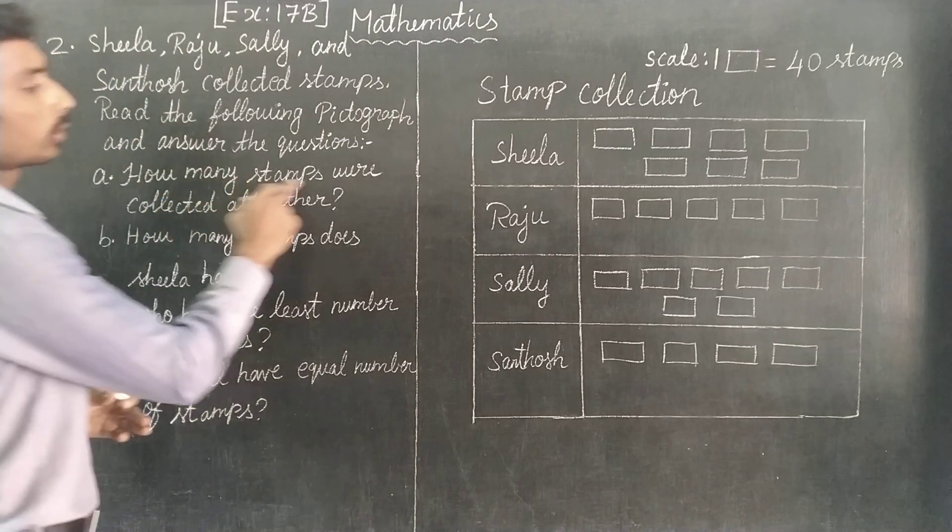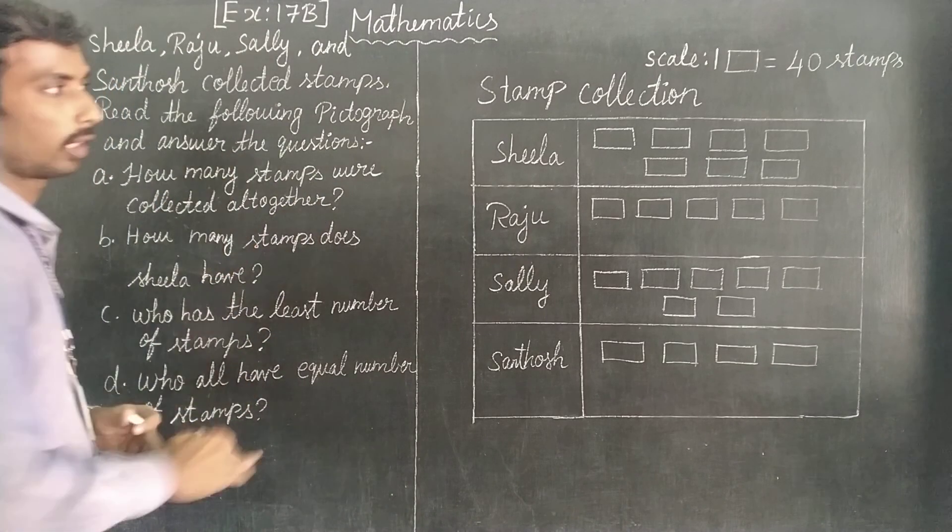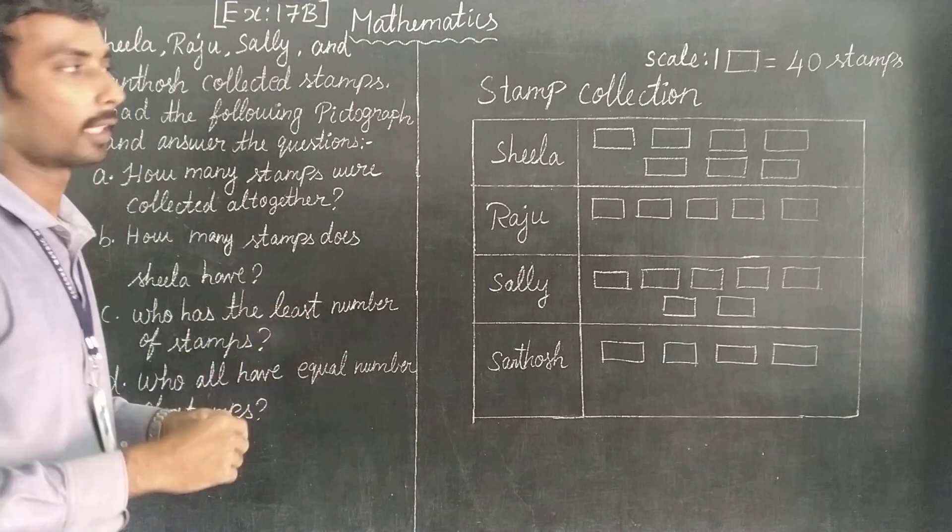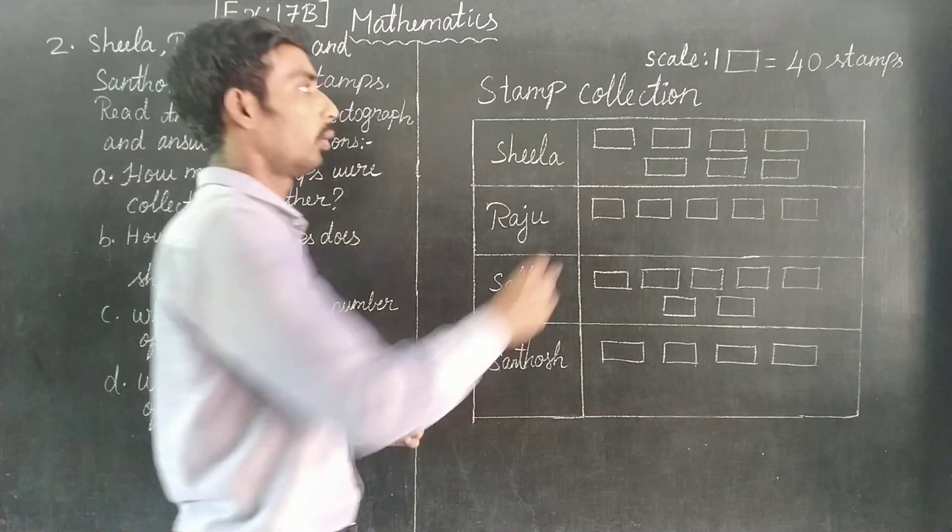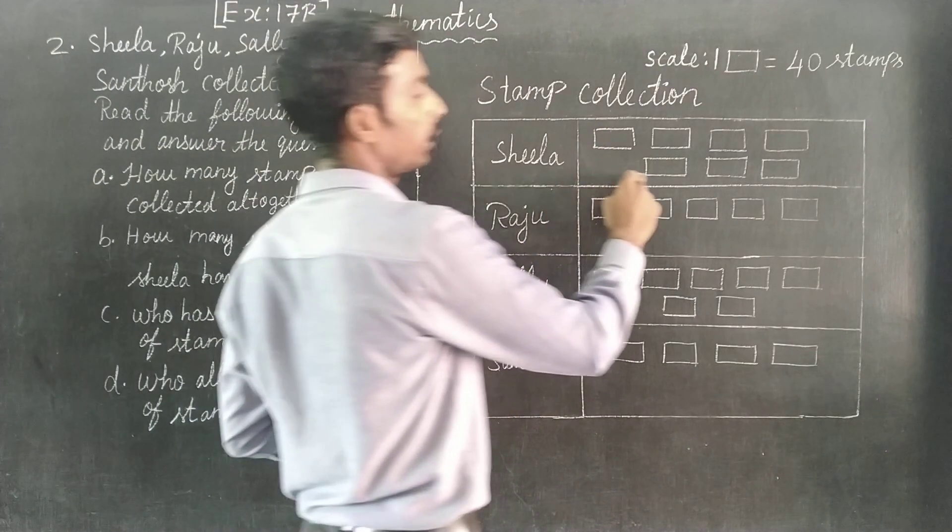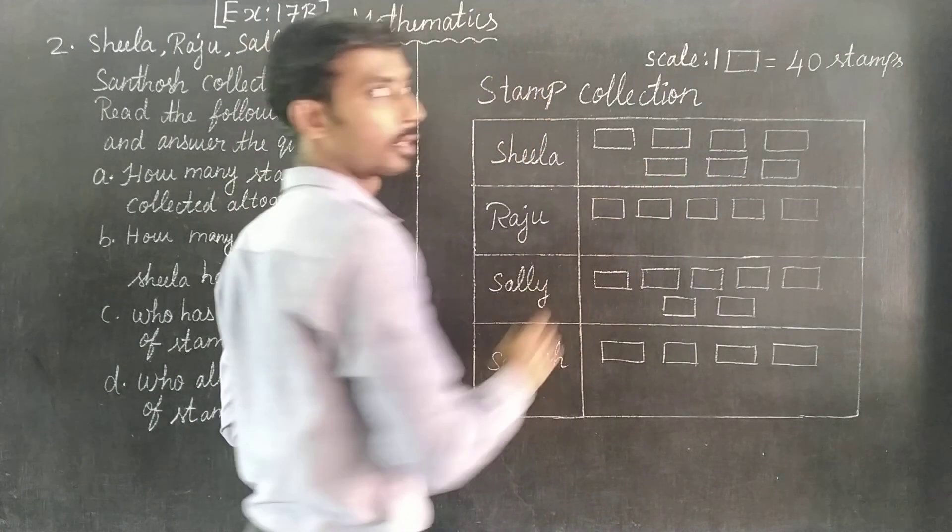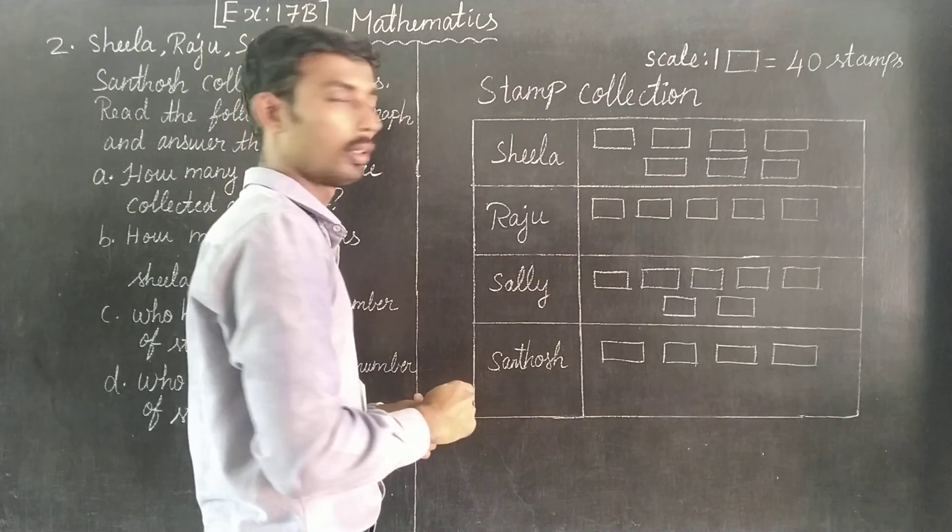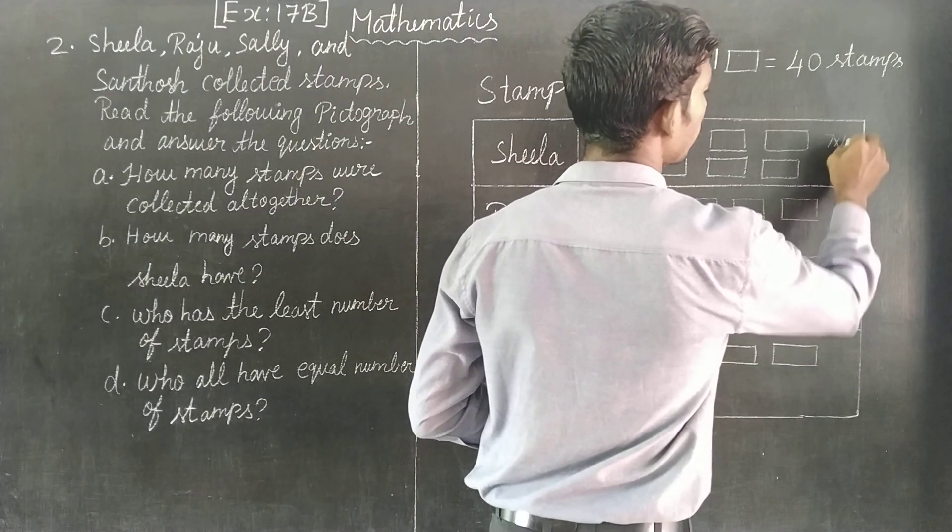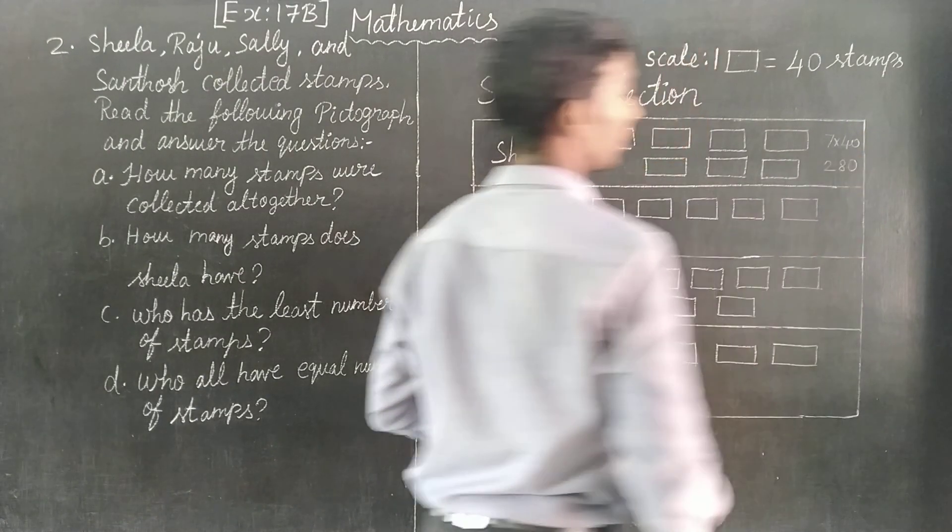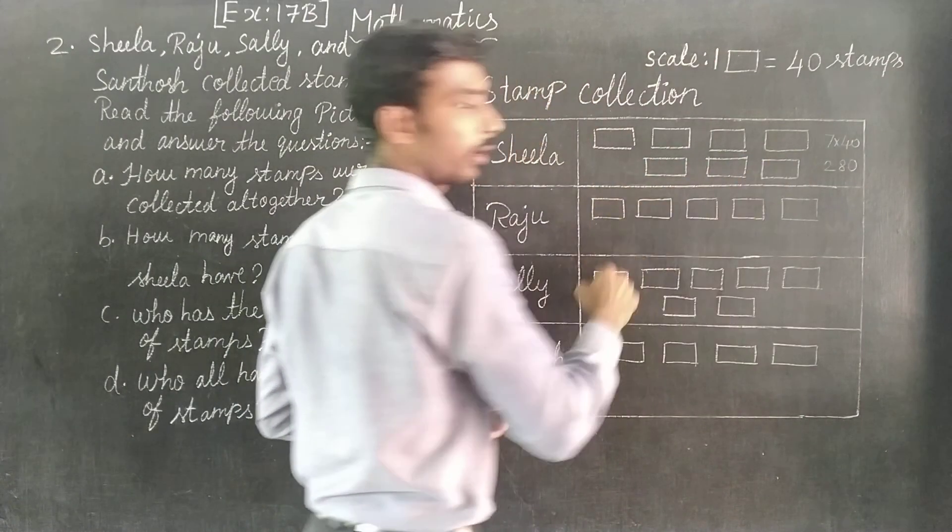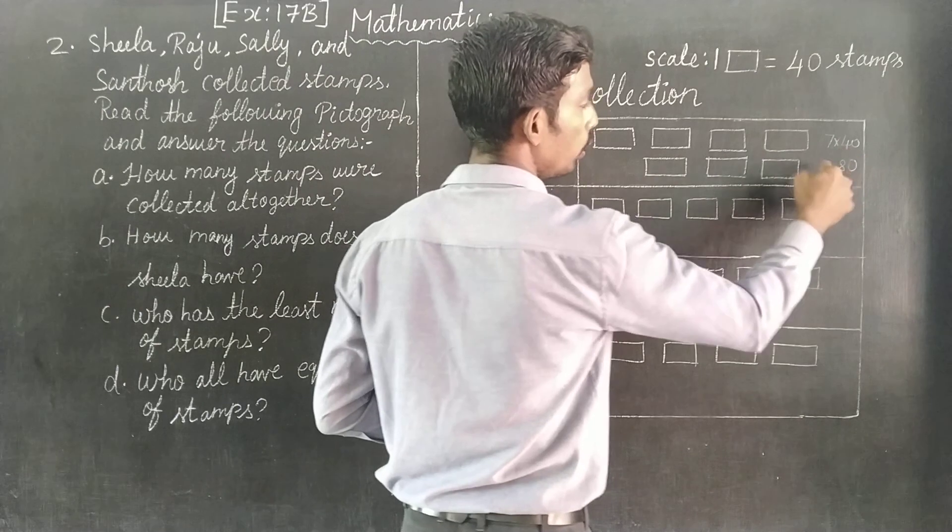How many stamps are collected all together? So if you look at the box, 40 stamps each. One, one, one...seven boxes for Sheela. Seven times 40 equals 280.